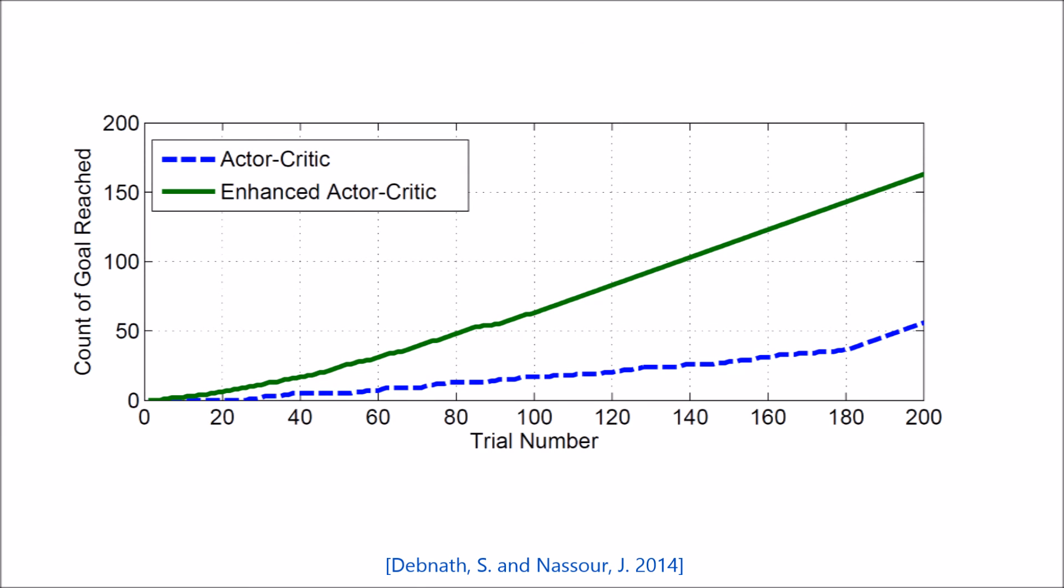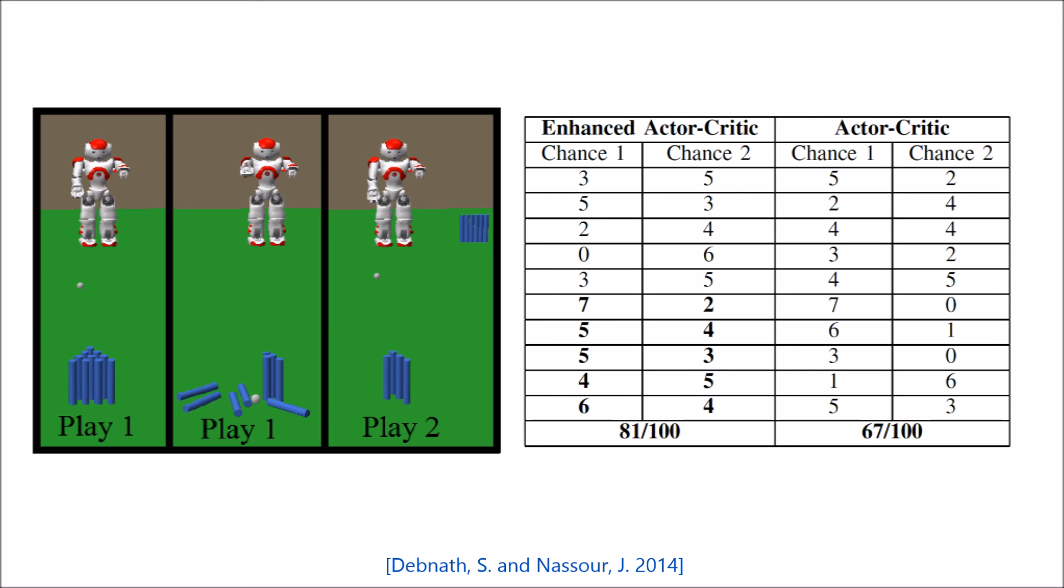This graph shows the rate of learning of both methods. The slope of the curve for the actor-critic method is less than that of the enhanced actor-critic method, which suggests that the enhanced actor-critic method learns faster than the actor-critic method.